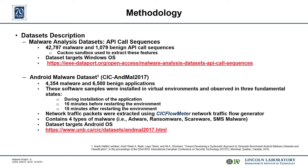The first dataset we are going to use is the Malware Analysis Datasets API Call Sequences, and it consists of 42,797 malware and 1,079 benign API call sequences. The information of those call sequences are extracted using Cuckoo Sandbox, and the dataset targets the Windows operating system.